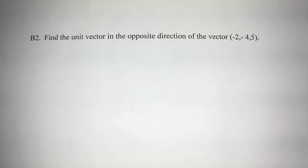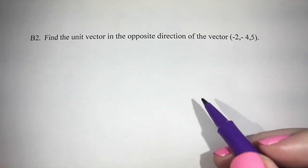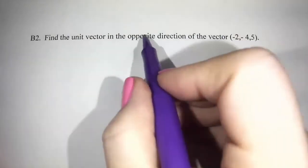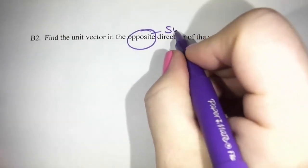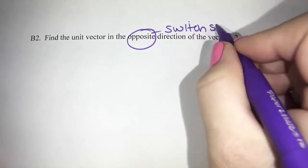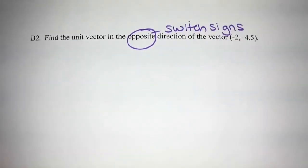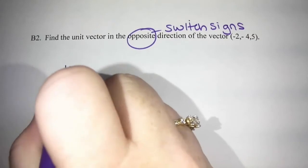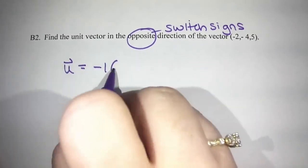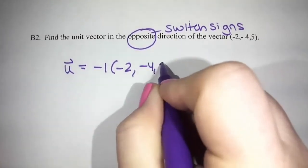So we're going to do another example here. We're going to find the unit vector in the opposite direction of the vector. So in the opposite direction means that we have to switch our signs. So we take our vector and our new vector U would be negative one times this vector that they gave us.